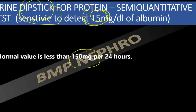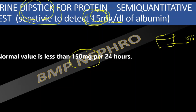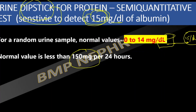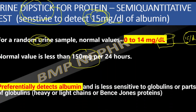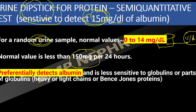The dipstick can detect up to 15 milligrams per deciliter of albumin in a collected urine sample — not for 24-hour excretion. It is sensitive enough to detect that amount of albumin. The normal value is usually less than 14 milligrams per deciliter in a random urine sample.